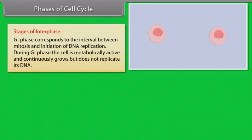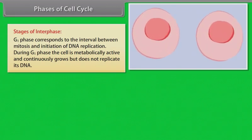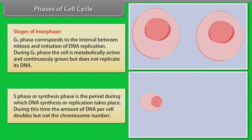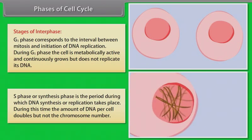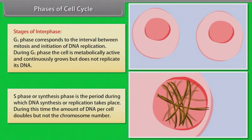G1 phase corresponds to the interval between mitosis and initiation of DNA replication. During G1 phase the cell is metabolically active and continuously grows but does not replicate its DNA. S phase or synthesis phase marks the period during which DNA synthesis or replication takes place. During this time the amount of DNA per cell doubles but not the chromosome number.